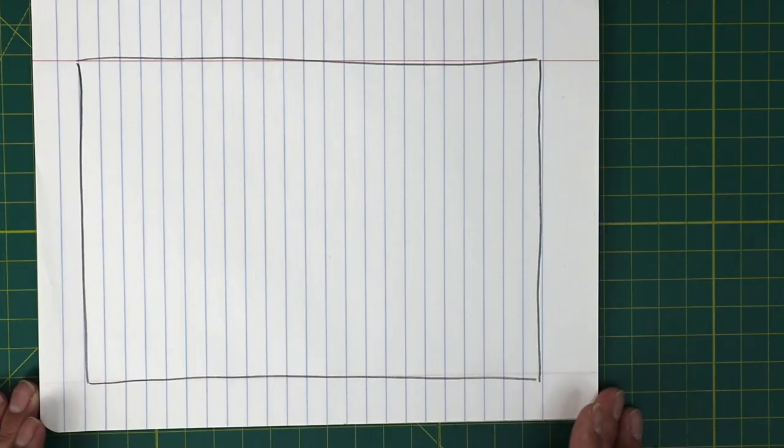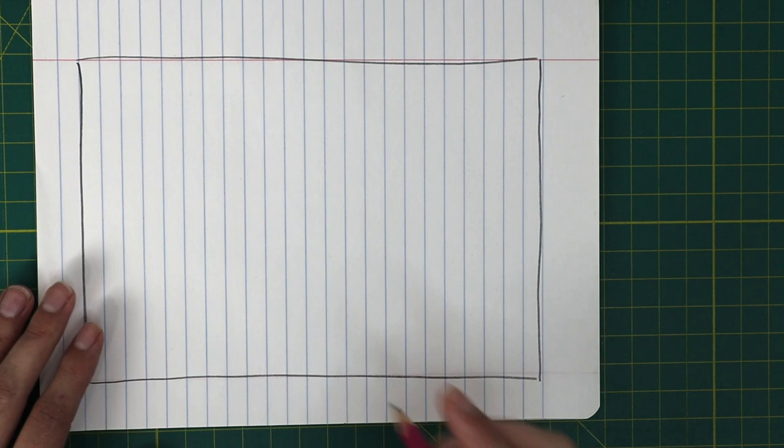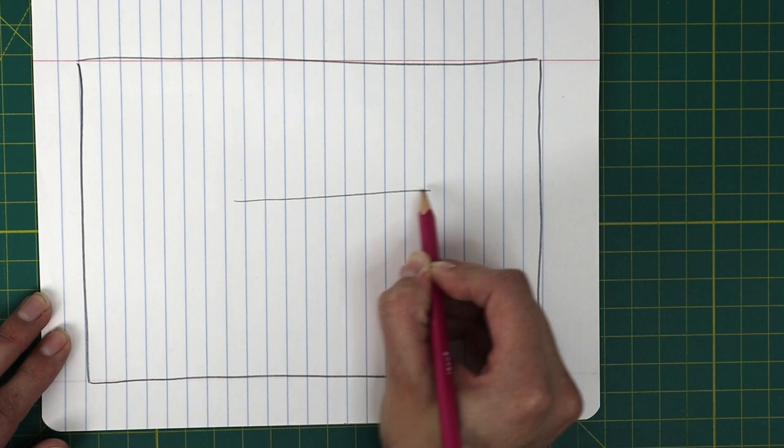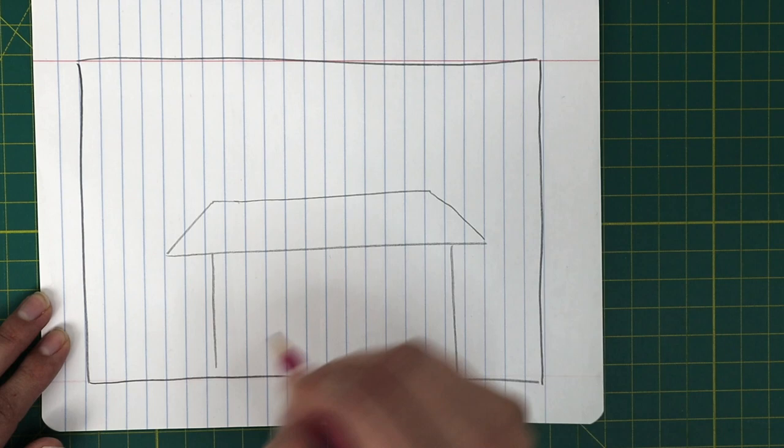In the middle of your frame, draw the outside of your living space. It can be a house, an apartment, a condo, etc. Make sure you draw it on the bottom half of your frame. The top half will be the sky.